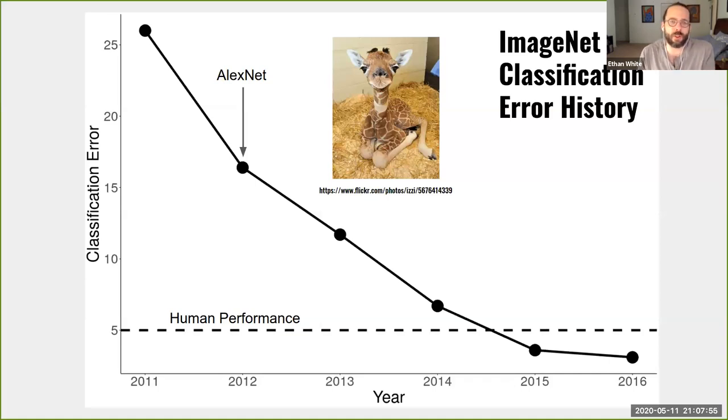But thanks in part to this competition, this classification error rate has dropped quickly over the last 10 years, until it was eventually better than even the average human performance.